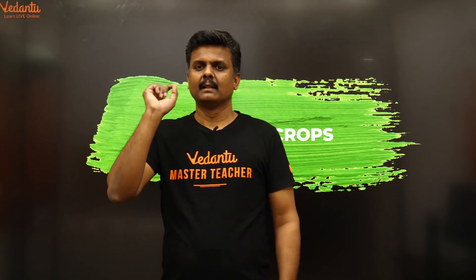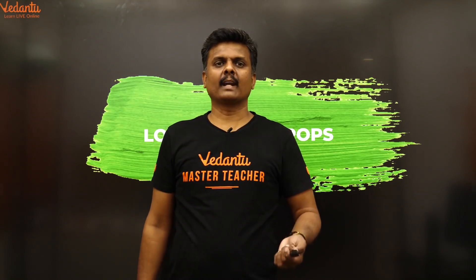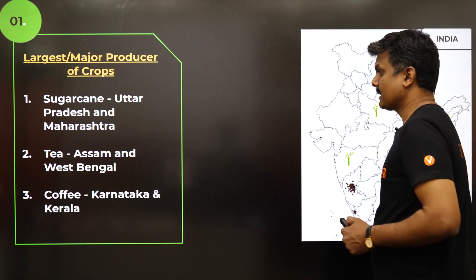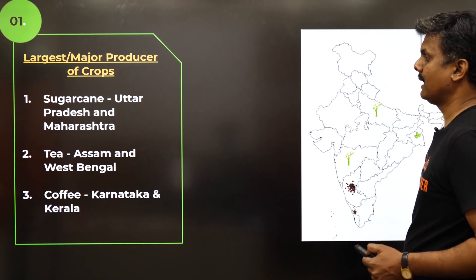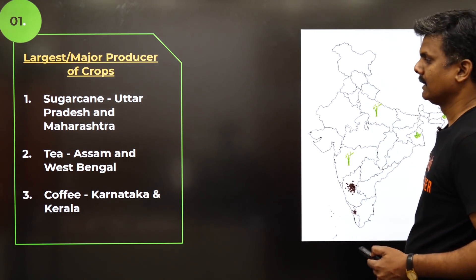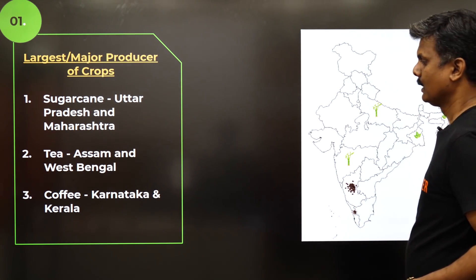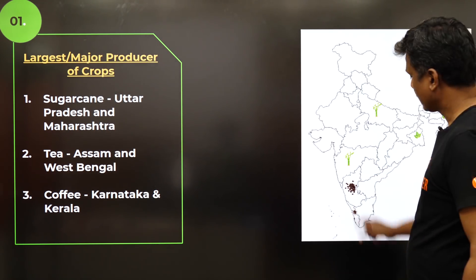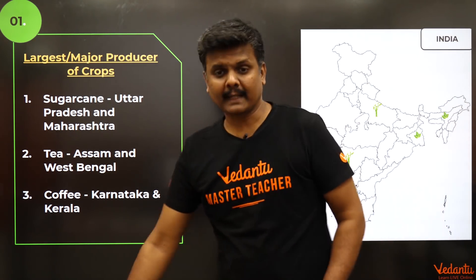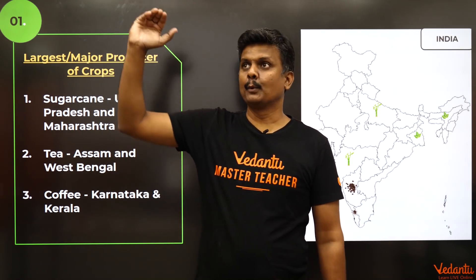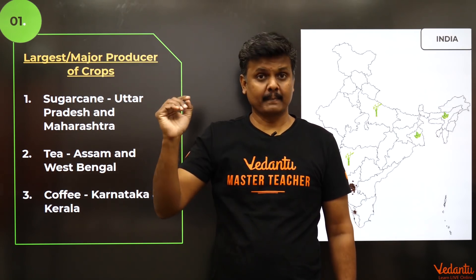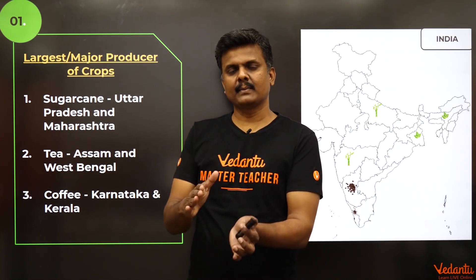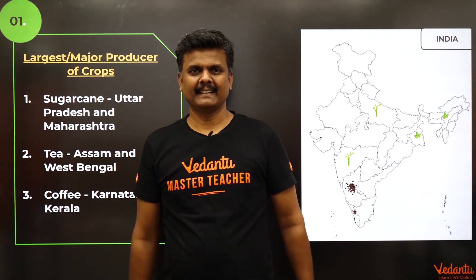Looking at the map for other crops: sugarcane is in Uttar Pradesh and Maharashtra; tea is in Assam and West Bengal, towards the northeastern corner; coffee is in the southern belt — Karnataka and Kerala. Quick reiteration: sugarcane grows in UP and Maharashtra, tea in Assam and West Bengal, coffee in Karnataka and Kerala.